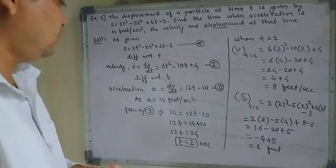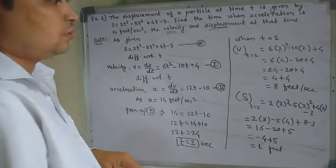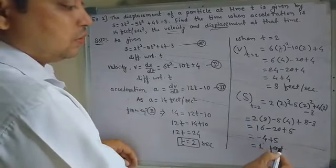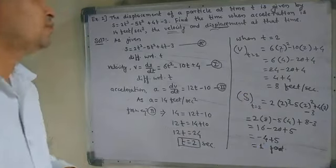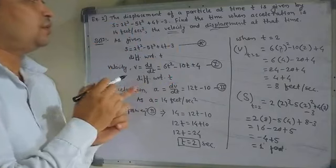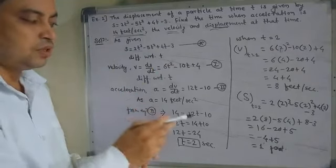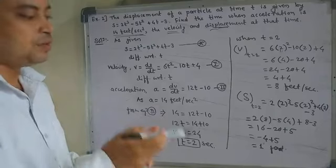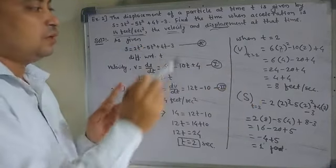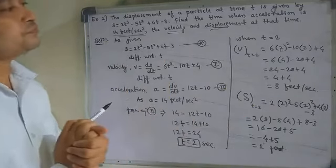So velocity will be 8 feet per second and acceleration will be 14 feet per second squared and displacement is 1 foot. This is a simple example — in this way we get the answer.